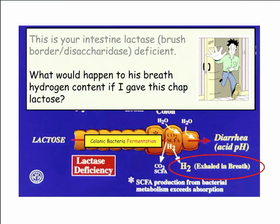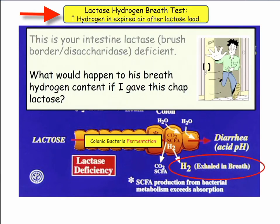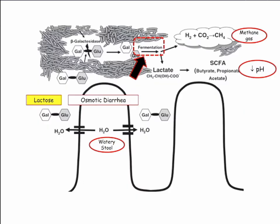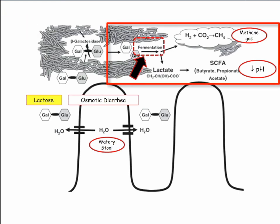Hydrogen is produced the same way. If I give this guy lactose and measure his breath hydrogen — if he doesn't have lactase present — the hydrogen goes up. It's a lactose-hydrogen breath test. It goes up after a lactose load. Here's normal, here's abnormal. These are all bacteria, and here's lactose exposed to them: fermentation, hydrogen gas, methane, CO2.